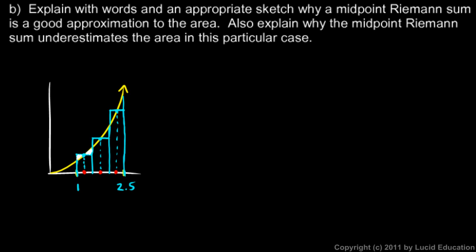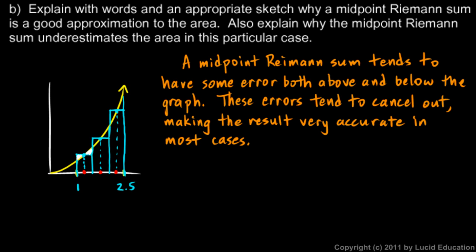And you should write that. On a problem like this, when it says explain with words, you should give a written explanation. And there's my written explanation. A midpoint Riemann sum tends to have some error both above and below the graph. These errors tend to cancel out, making the result very accurate in most cases.